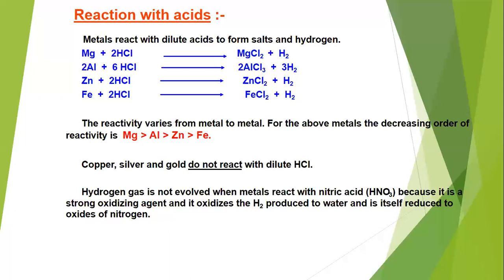On the basis of these four reactions, we can arrange these metals: magnesium is the most reactive among these four, then aluminium, then zinc, then iron. Copper, silver, and gold are less reactive metals at the bottom of the reactivity series and do not react with hydrochloric acid or sulfuric acid.